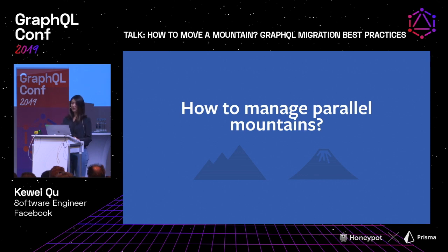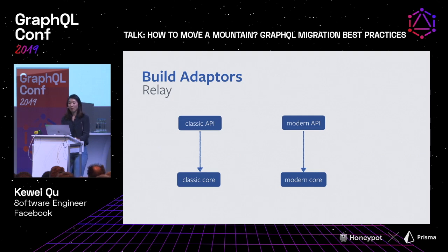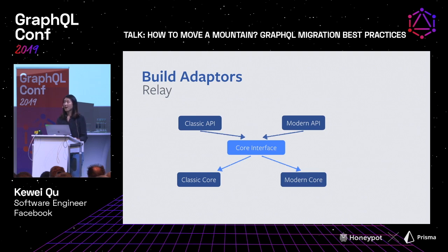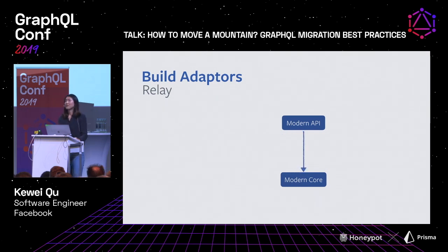Now that we've decided to go with incremental changes, for a while you'll find yourself needing to manage two equivalent systems — two parallel mountains. Our solution to this is to build adapters. For Relay, we started with the classic API calling into the classic core, and the modern API calling into the modern core. We introduced an adapter called the core interface that is able to call into both the classic core and the modern core. Then we had both the classic API and modern API call into the core interface. Therefore, we were able to get rid of the classic API. As we gradually migrated the classic core into the modern core, we finally ended up with entirely the modern system.